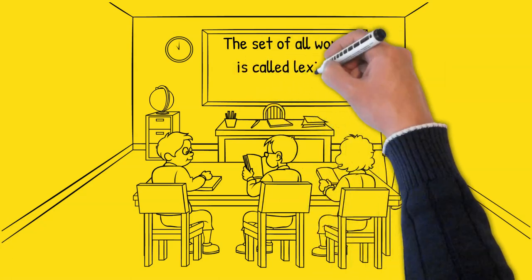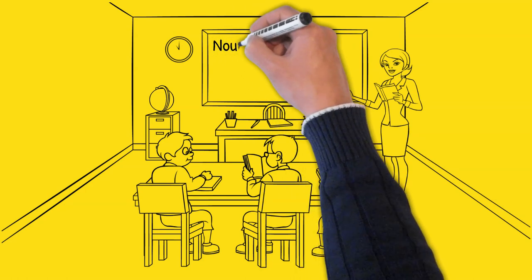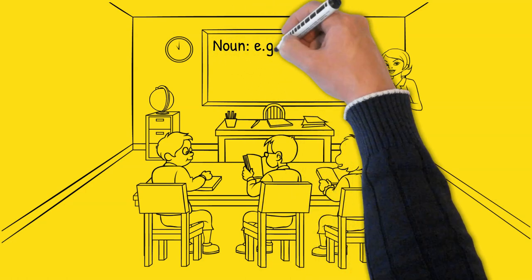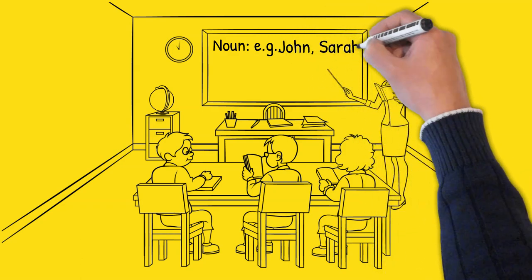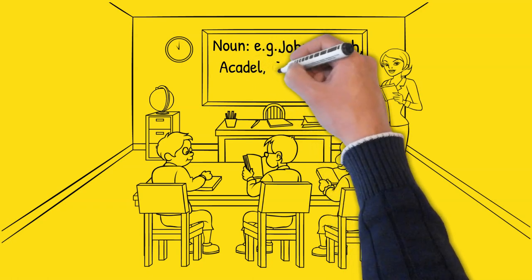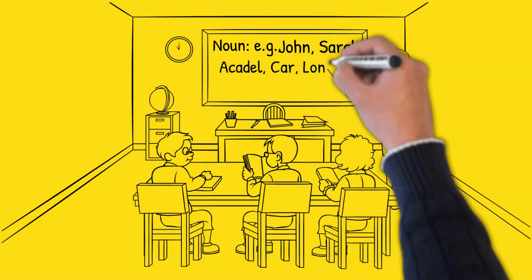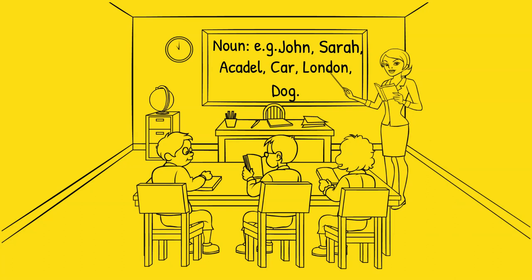The set of all words is called lexical items. Number one: noun — naming words. For example, John, Sarah, Academy, Car, London, Doc, and so forth. A noun must always start with a capital letter.